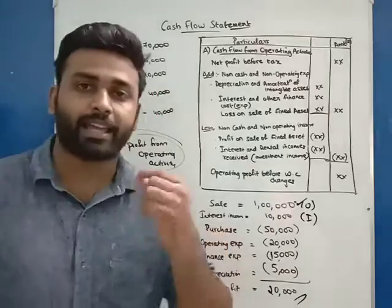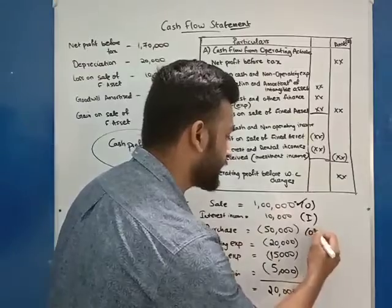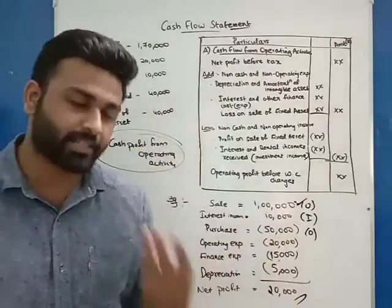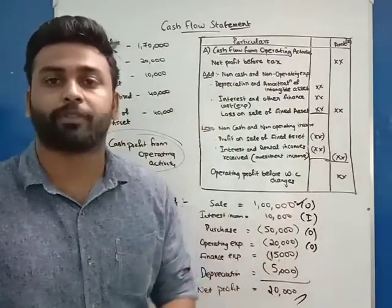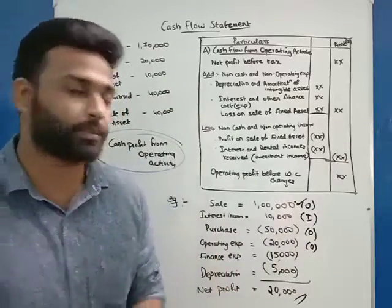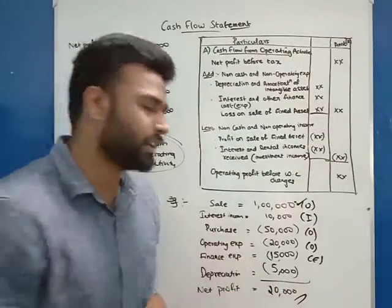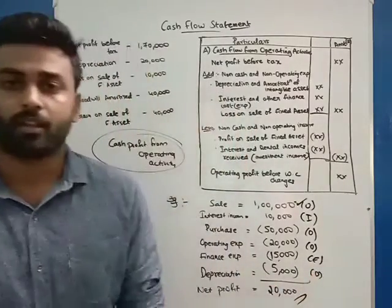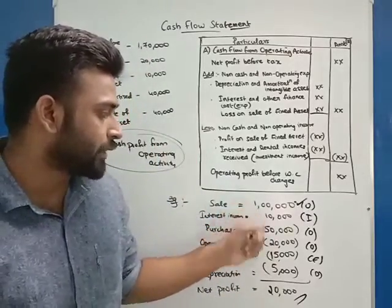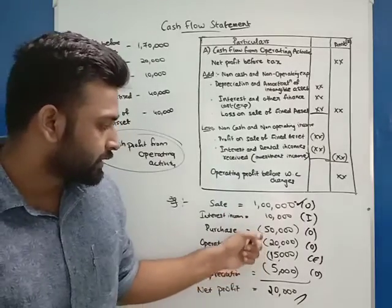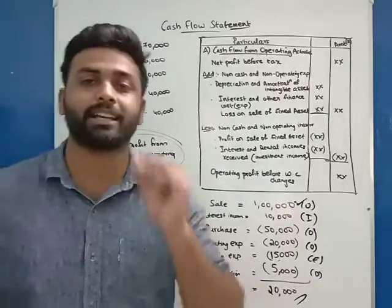The expenses given are: purchase 15,000 — which is an operating activity; operating expense 20,000 — also an operating activity; finance expense 15,000 — which comes under financing activity; and depreciation 10,000 — which is an operating activity. So when we find the net profit of the business, we get 1 lakh 10,000 minus 15,000, 20,000, 15,000, and 10,000 — giving a net profit of 20,000.